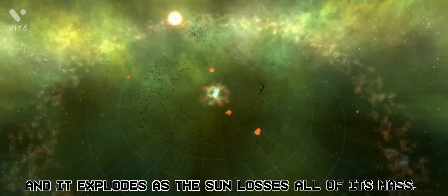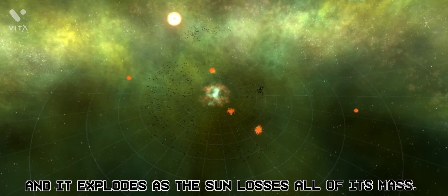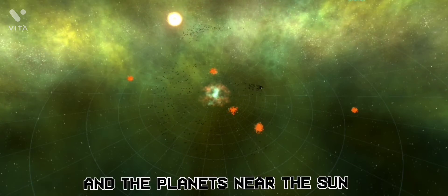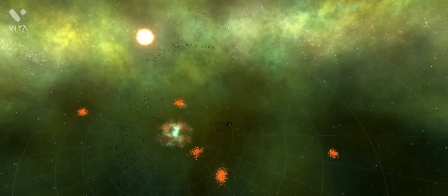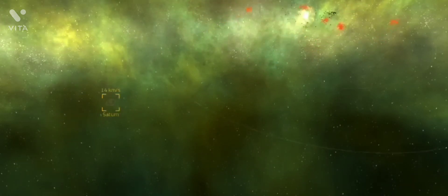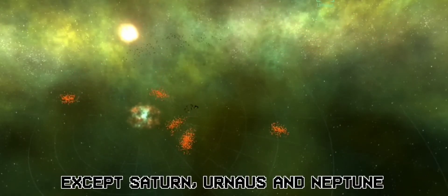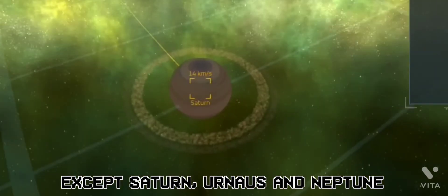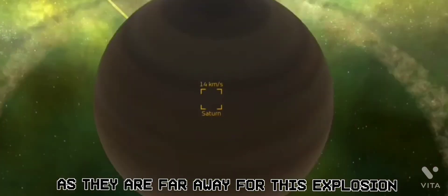And it explodes as the sun loses all of its mass. And the planets near the sun also explode from its explosion. Except Saturn, Uranus and Neptune, as they are far away from this explosion.